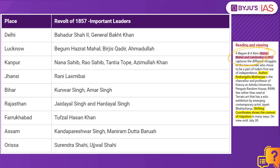Let us see who were the leaders in each region. In Delhi, it was led by Bahadur Shah as well as General Bakht Khan. In Lucknow, it was led by Begum Hazrat Mahal, Birgis Qadir and Ahmadullah. In Kanpur, it was led by Nana Sahib, Tantia Tope and Azimullah Khan. In Jhansi, it was led by Rani Lakshmibai. In Bihar, it was led by Kunwar Singh and not Jai Dayal Singh.